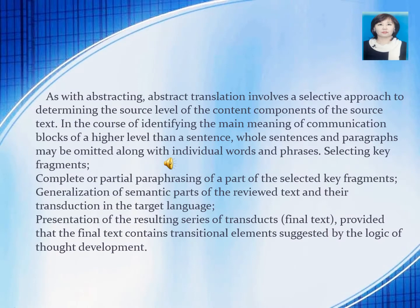As with abstracting, abstract translation involves a selective approach to determining the source level of the content components of the source text. In the course of identifying the main meaning of communication, blocks of a higher level than a sentence — full sentences and paragraphs — may be used alongside individual words or phrases. This involves selecting key fragments, complete or partial regrouping of selected key fragments, generalization of the main parts of the reviewed text and their transduction into the target language, and presentation of the resulting series of transductions as a final text, provided that the final text contains the translation suggested by the logic of the development.